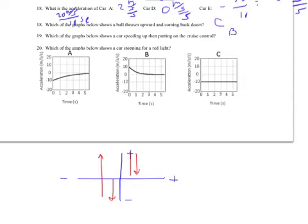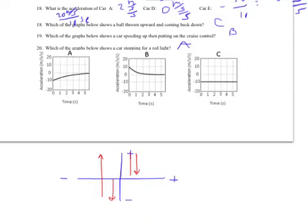Which shows a car stopping for a red light? When it stops for a red light, its acceleration is zero. Both of these have an acceleration of zero, so how can I tell which one? When you're stopping, you're slowing down, so you'd have a negative acceleration first. This one is slowing down and eventually it's no longer slowing down — it's either at constant velocity or speed of zero. So the last answer is A. Those last three are a little confusing, but it's good for you. We'll catch you on the next homework.